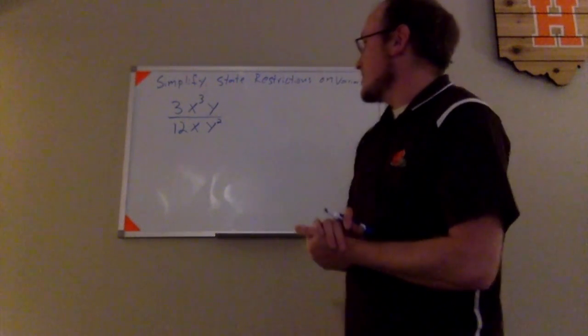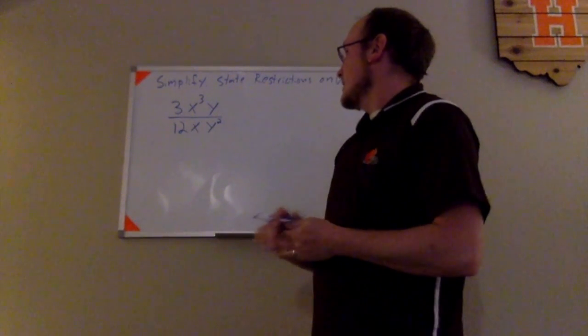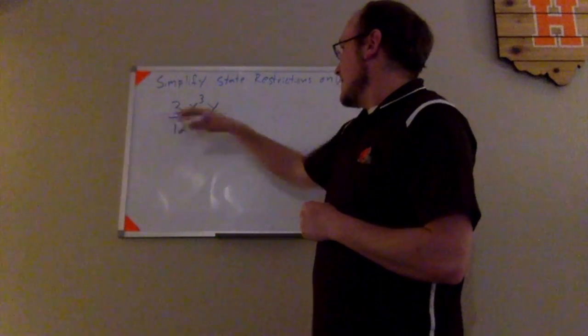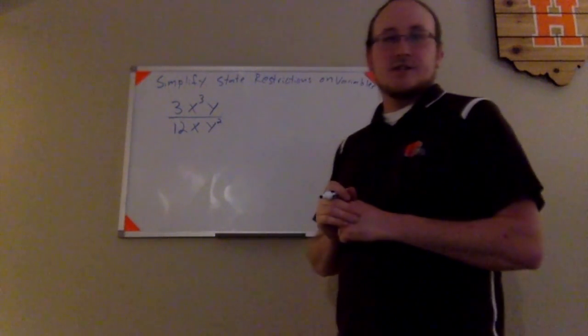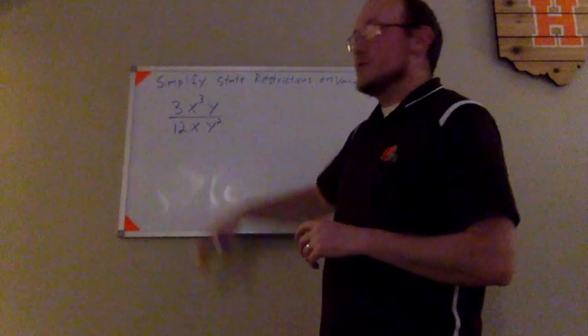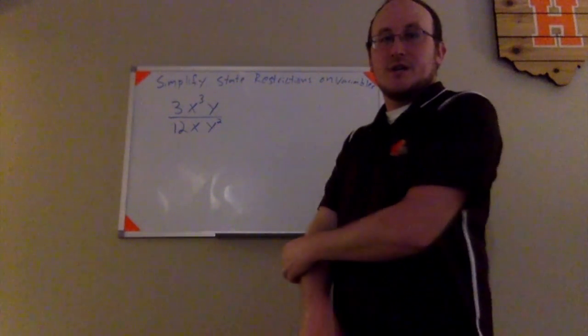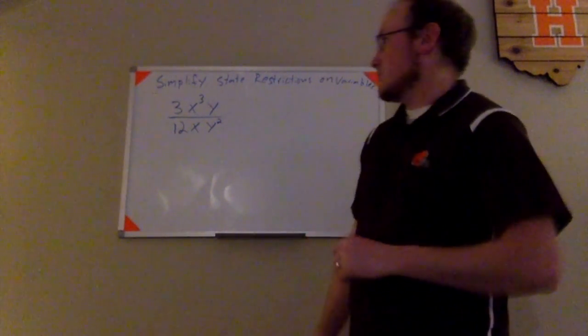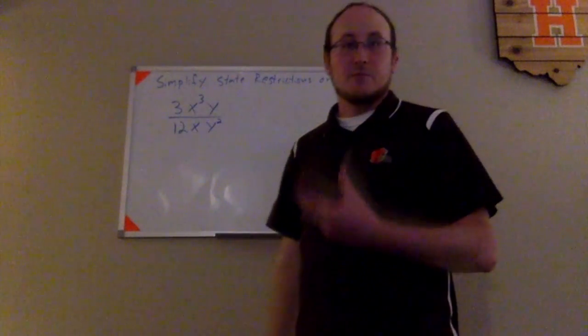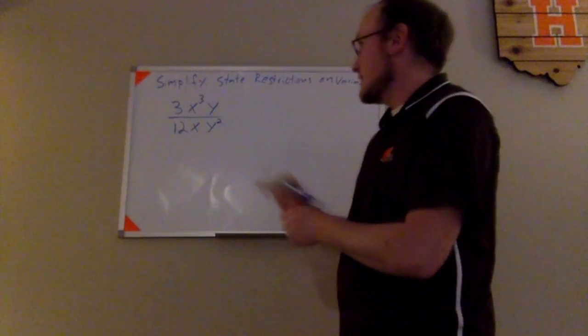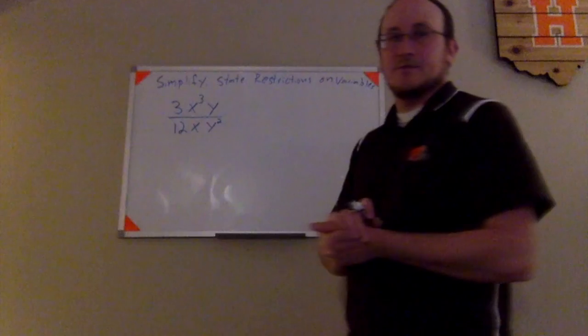So here we have the rational expression 3x to the third times y divided by 12xy squared. We have a quotient of two monomials here to create this rational expression. Those monomials contain multiple variables, but let's take a look at how this simplifies.